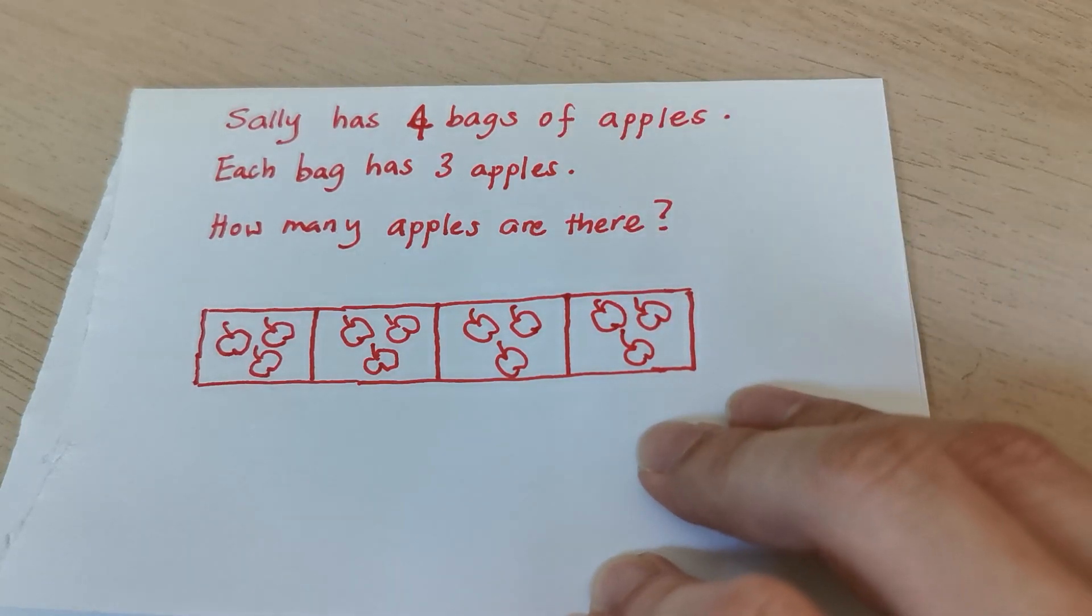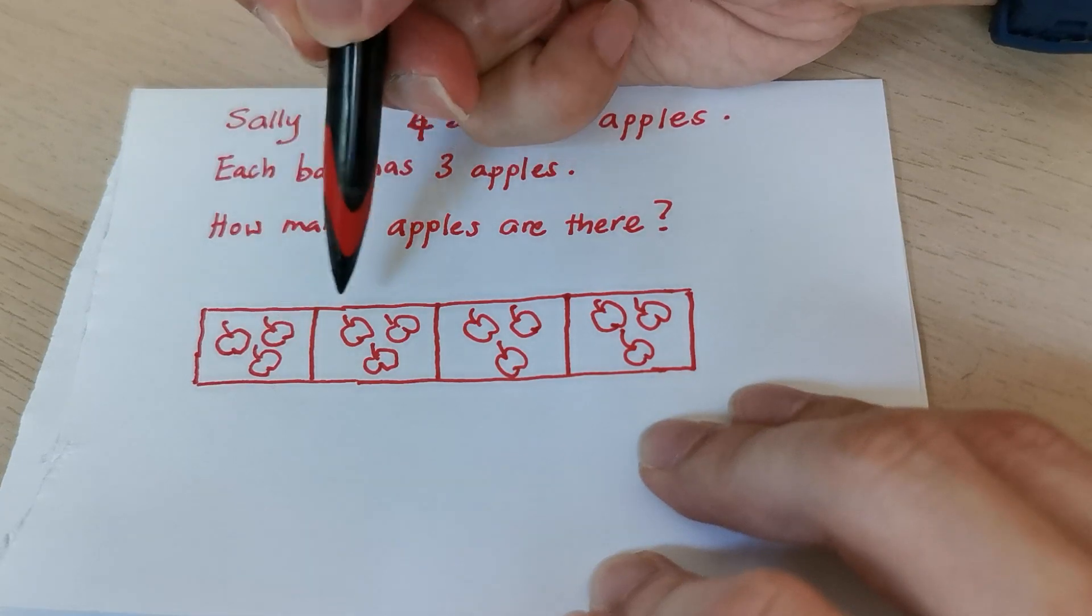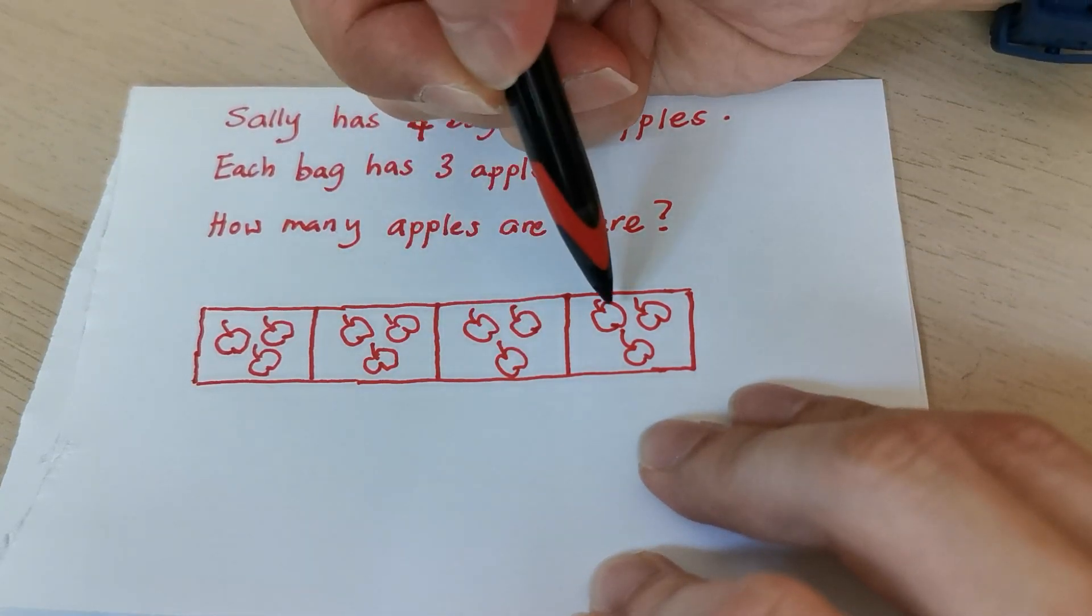All right, Sally has four bags. Each bag has three apples. Well done. How many apples are there? So a lot of people will start doing this. One, two, three, four, five, six, seven, eight, nine, ten, eleven, twelve.